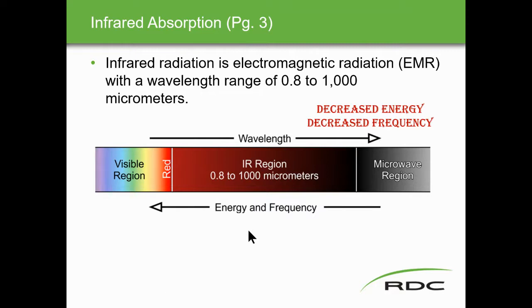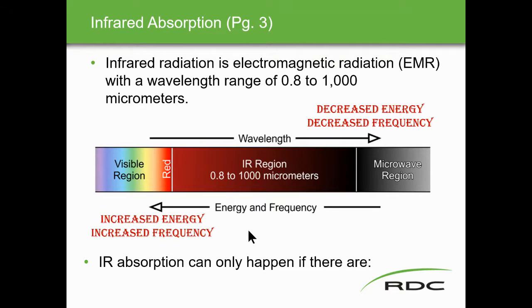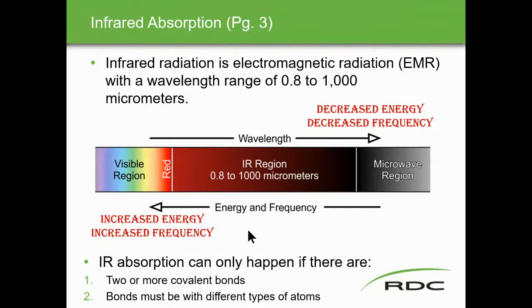As discussed in spectroscopic analyzers, decreased wavelength means increased frequency and increased energy. IR absorption can only happen if there are two or more covalent bonds, or the bonds must be between different types of atoms. If neither condition is met, there will be no absorption of infrared radiation.